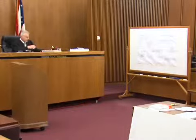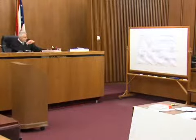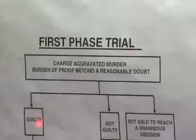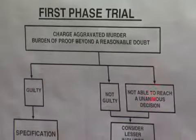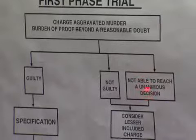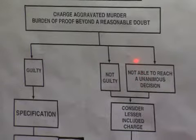Now in that second phase of trial, if there is one, you would be asked to determine if the acts or circumstances proved beyond a reasonable doubt — the nature and circumstances of the offense, the history, character, and background explained to you. And the chart does indicate that there are two phases.